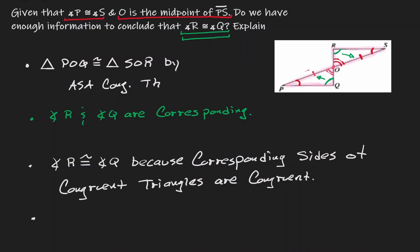Another way to state this: angle R is congruent to angle Q by CPCTC — corresponding parts of congruent triangles are congruent. The strategy here was to acknowledge that there were two triangles, show that those triangles were congruent, and then conclude that every single corresponding angle and side will be congruent.